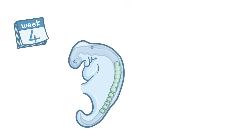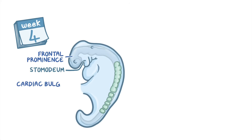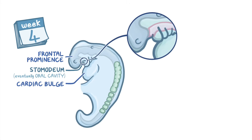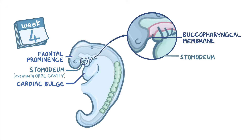At this point, a small pit called the stomodeum forms between the frontal prominence and the developing cardiac bulge, and it will eventually become the oral cavity. At the back of the stomodeum, there's a two-layered membrane called the buccopharyngeal membrane, made up of ectoderm and endoderm. The buccopharyngeal membrane initially separates the stomodeum from the foregut, but soon disintegrates, allowing free access between the stomodeum and the foregut.